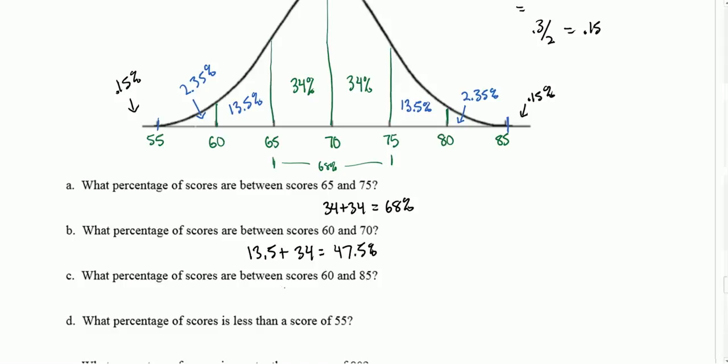What percentage of scores is between 60 and 85? We add those up, and we get 97.35.